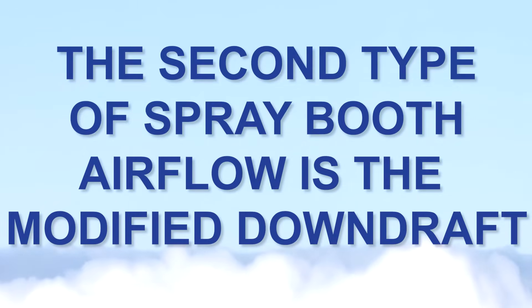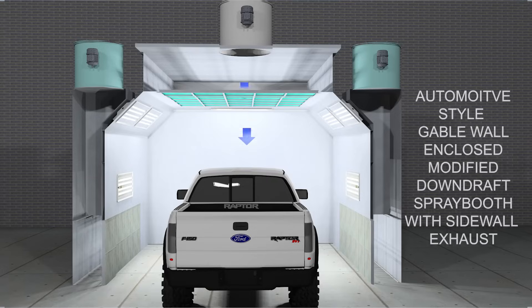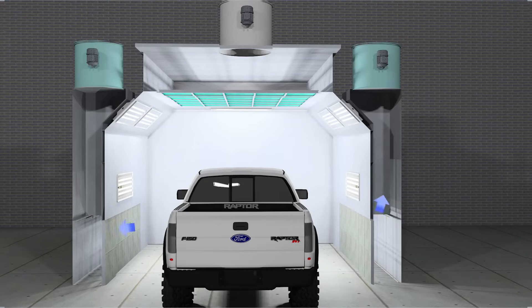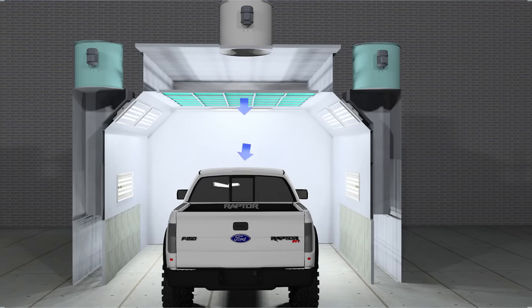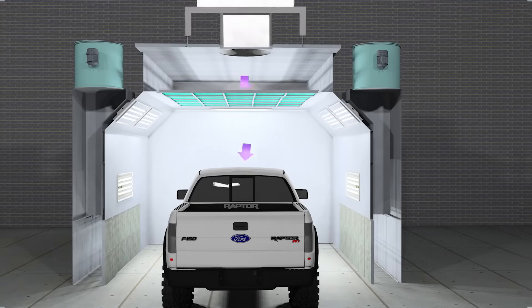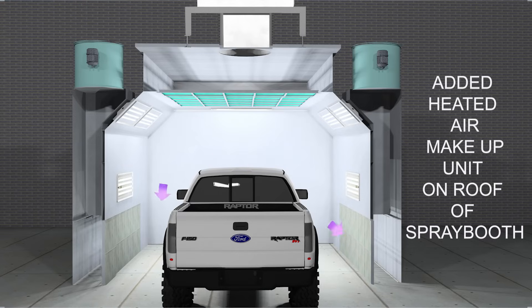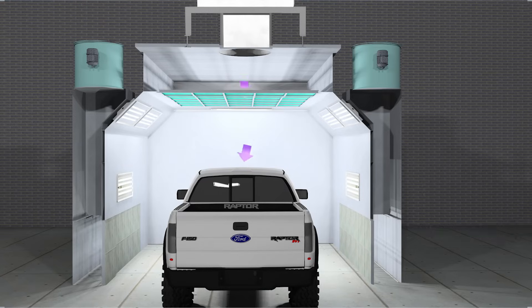The second type of airflow that you will see in a spray booth is the modified downdraft spray booth. It is very similar to the Crossdraft spray booth in every way, except the air does not come from one end of the booth and pass to the other end. It takes a shorter path from the roof or ceiling of the spray booth to the sides or back wall of the spray booth. This type of spray booth is more effective than the Crossdraft spray booth in contamination control. With a pressurized intake fan or heated air make-up unit, it will further reduce potential dust and other contamination from the incoming air passing to the exhaust filters.